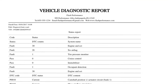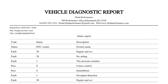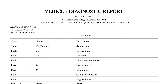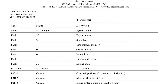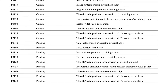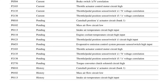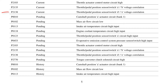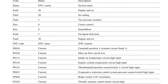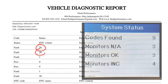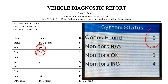There are multiple uses for the scan report that you can pull from your MaxiSys tool. Using this report can help your customer understand why you charge them a fee to scan their vehicle. With this report you can show them the code and definition in all systems of their vehicle, when the parts store's free scan will only show generic engine codes.